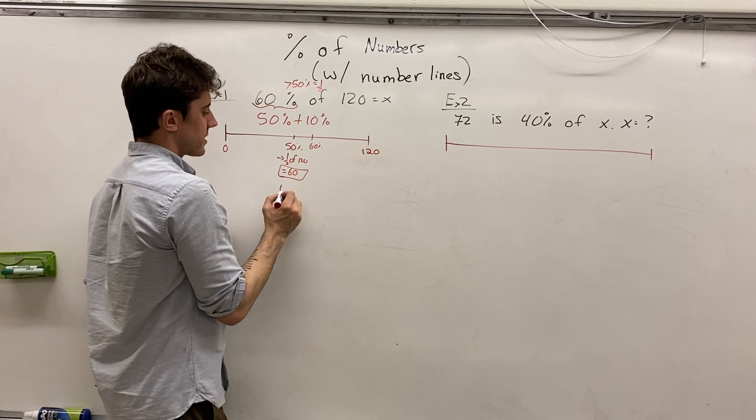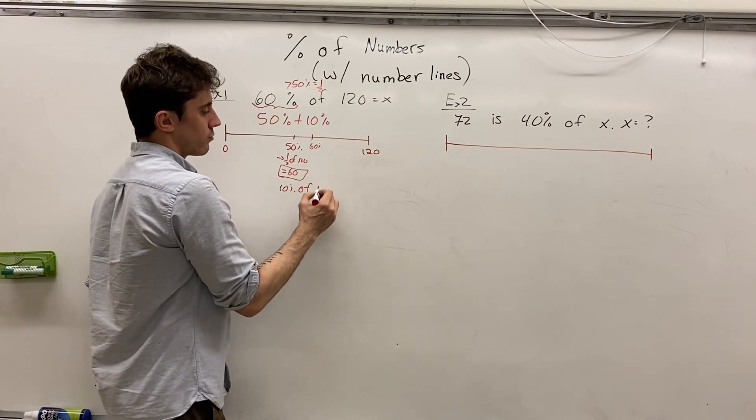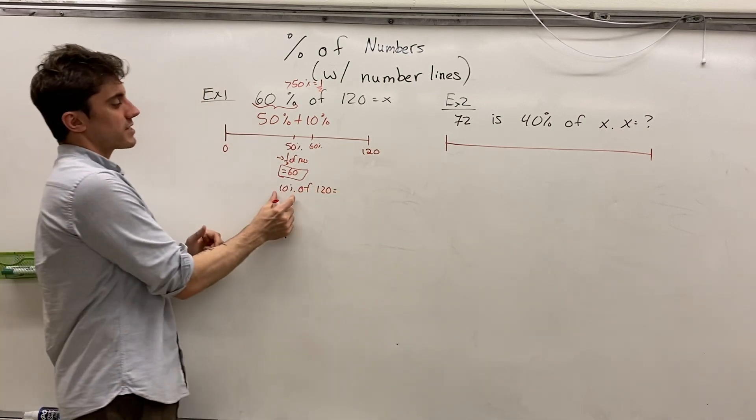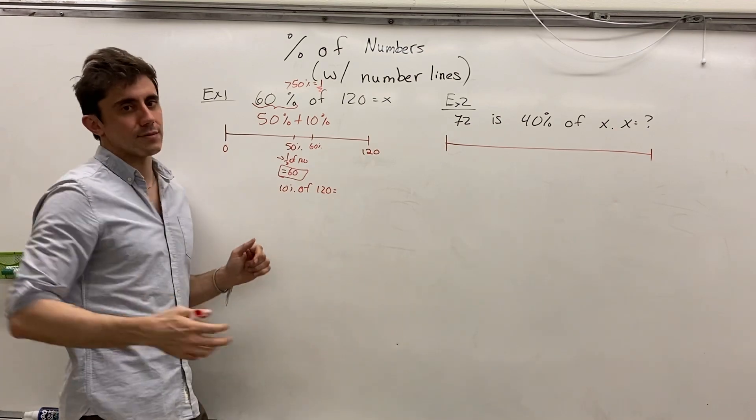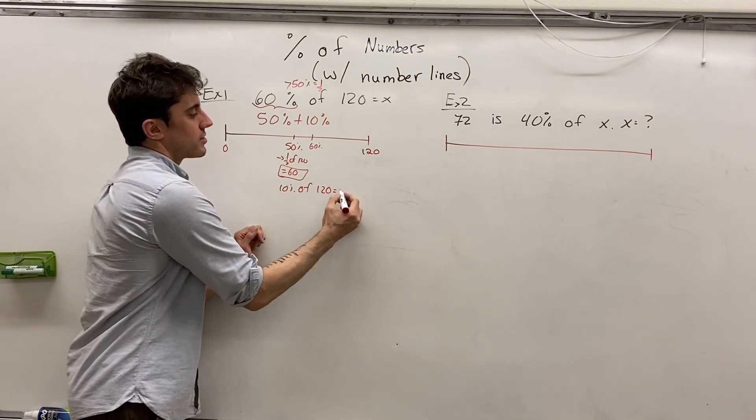And so if 50% of 120 being half of 120 is 60, then 10% of 120, that's readily available to us, because 10% of any number ending in 0, we simply take off the 0 at the end. And so we get a value of 12.